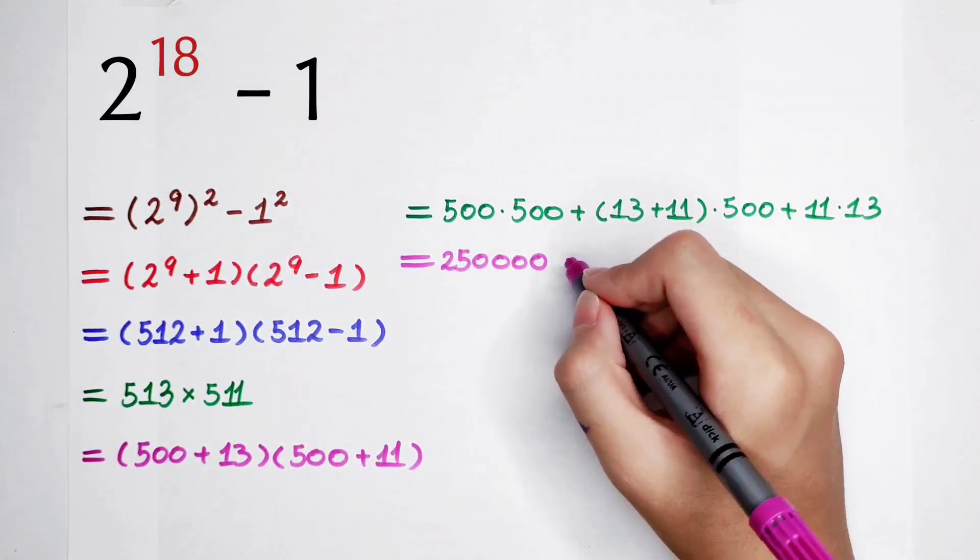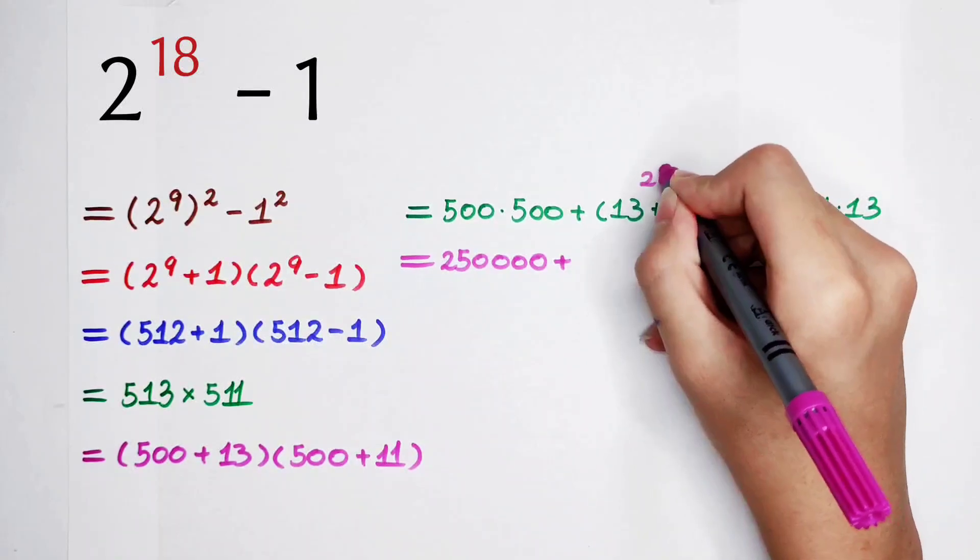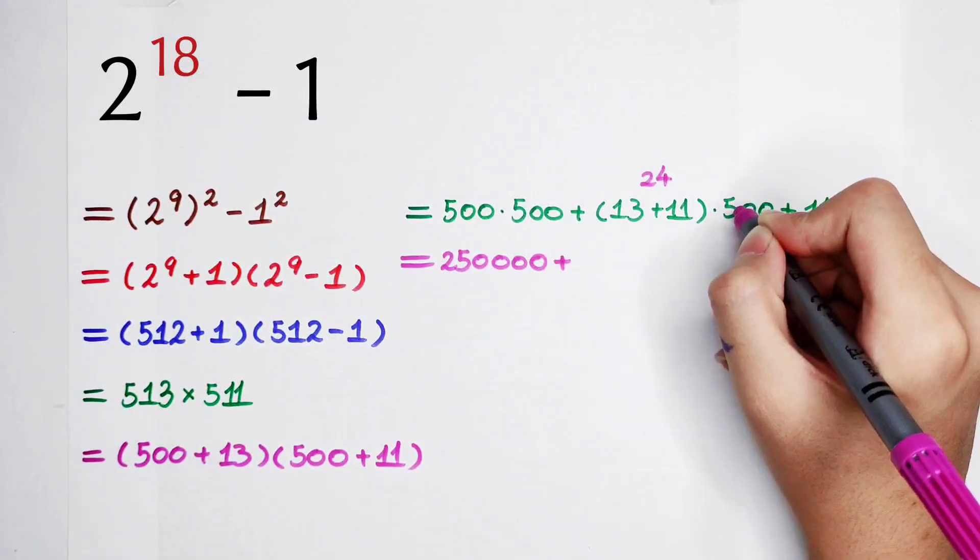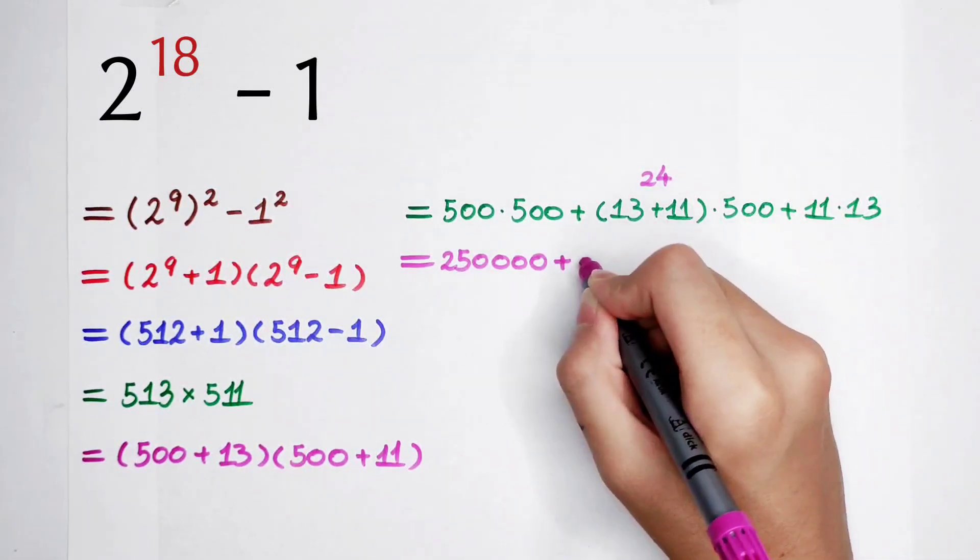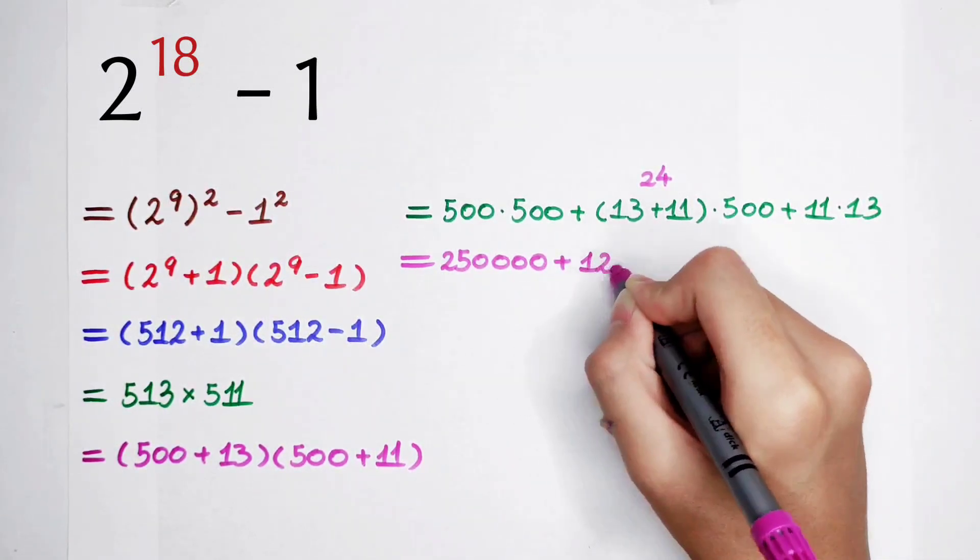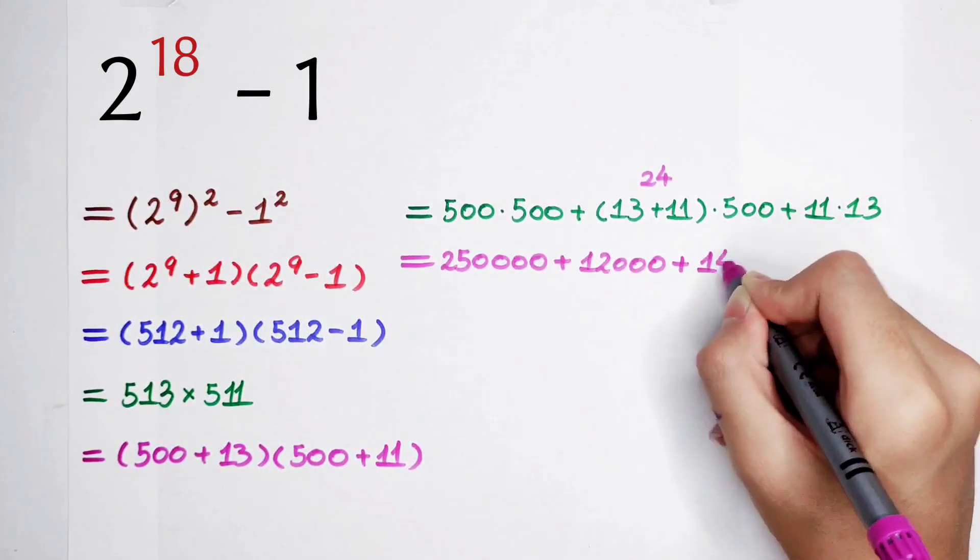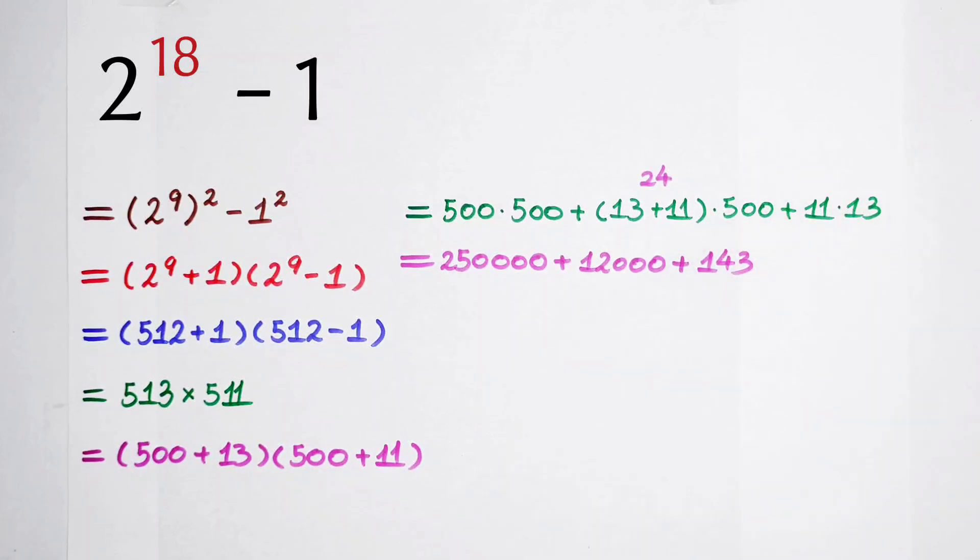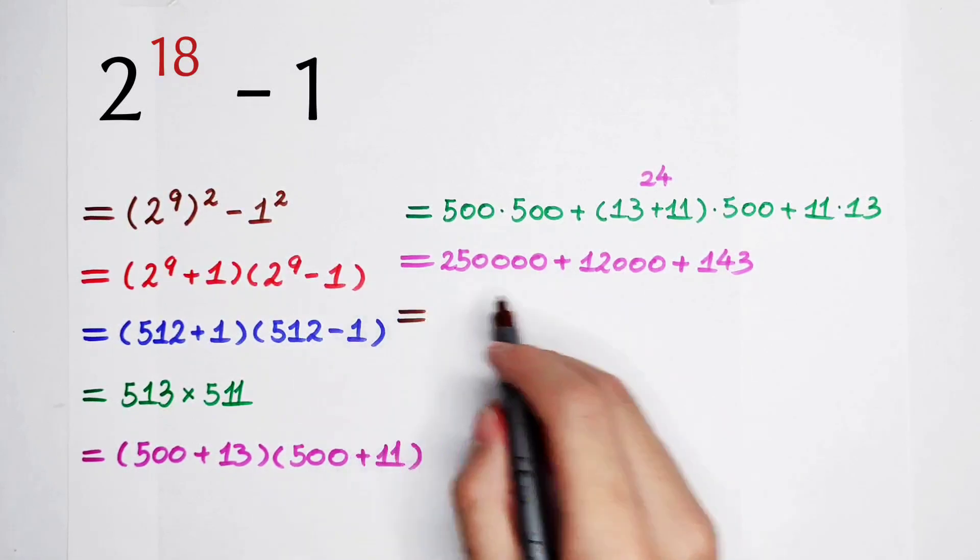250,000, and then plus 13 plus 11, it is 24. 24 times 5 is 120. So it's 12,000 and then plus 143. Next step, you just add them together. 2 and the next digit is 5 plus 1 is 6, and the next digit is 2, and 1 4 3. The final answer: 262,143.